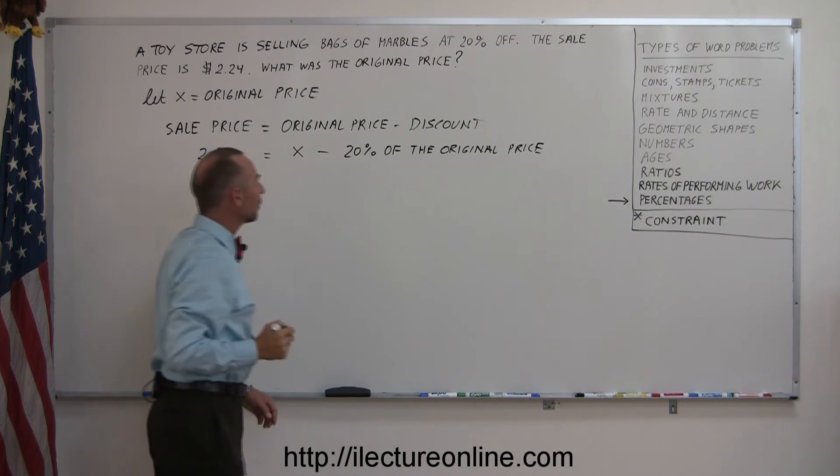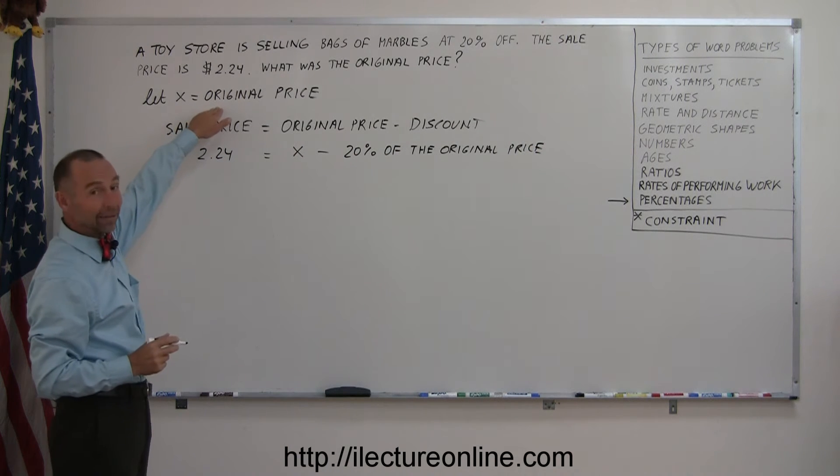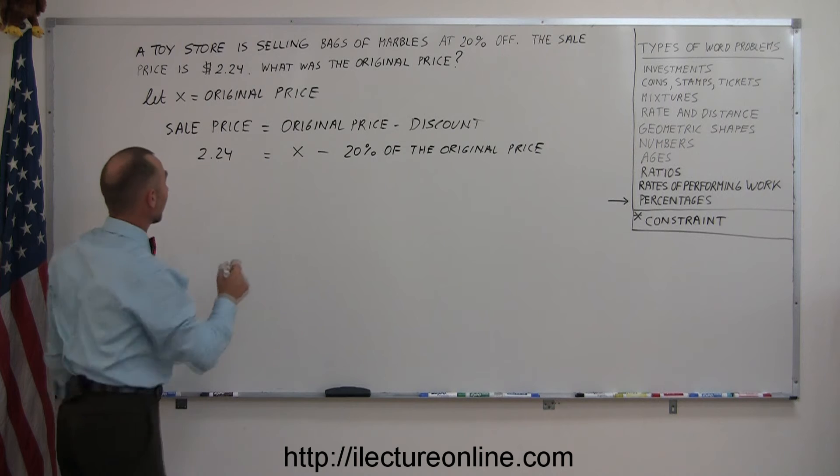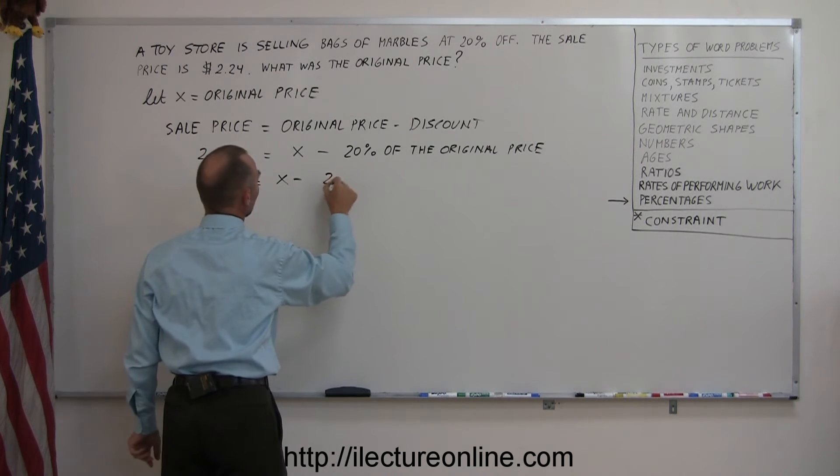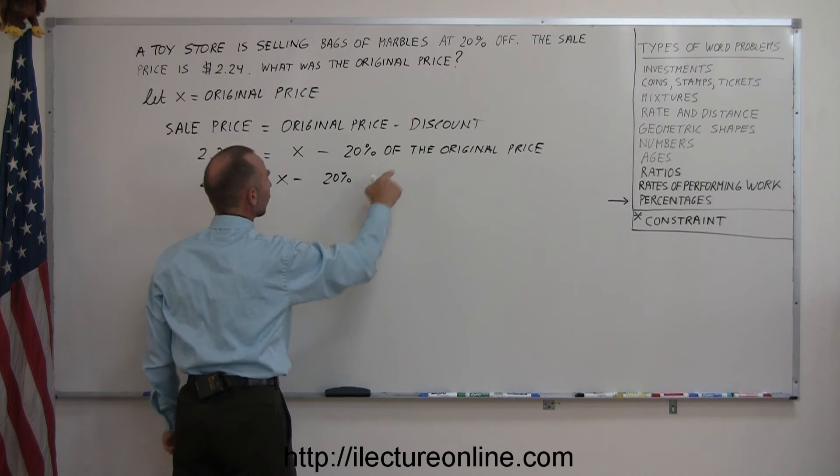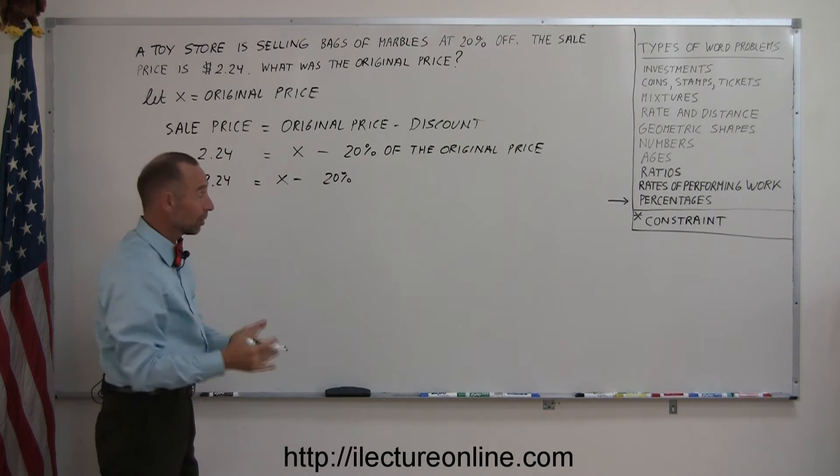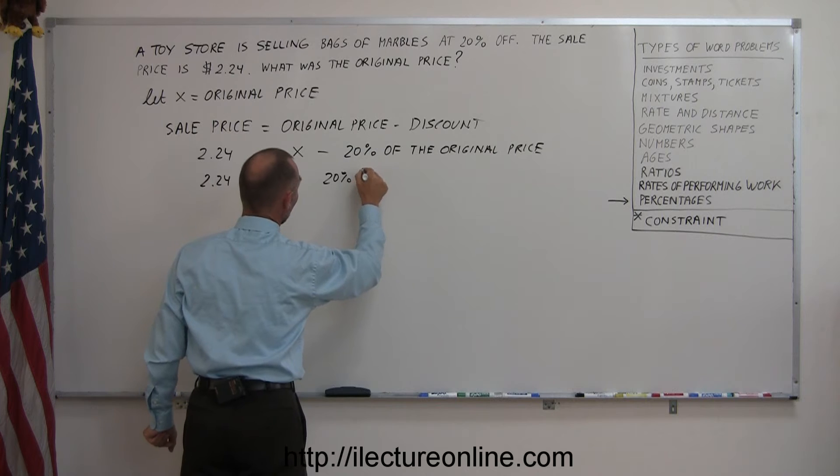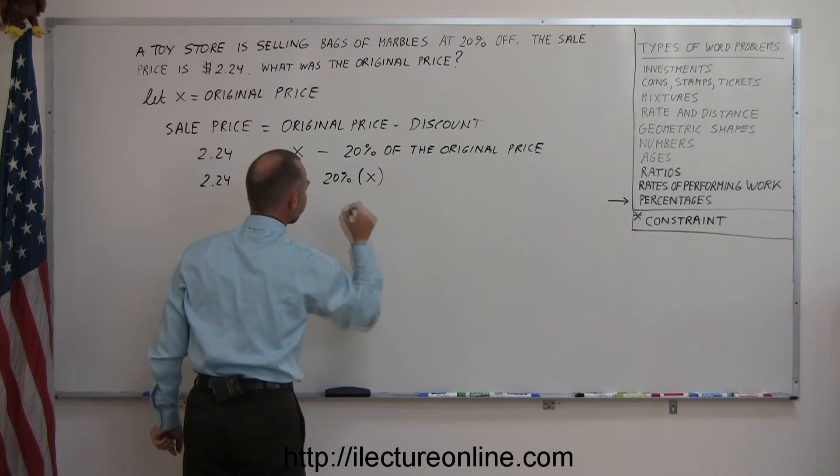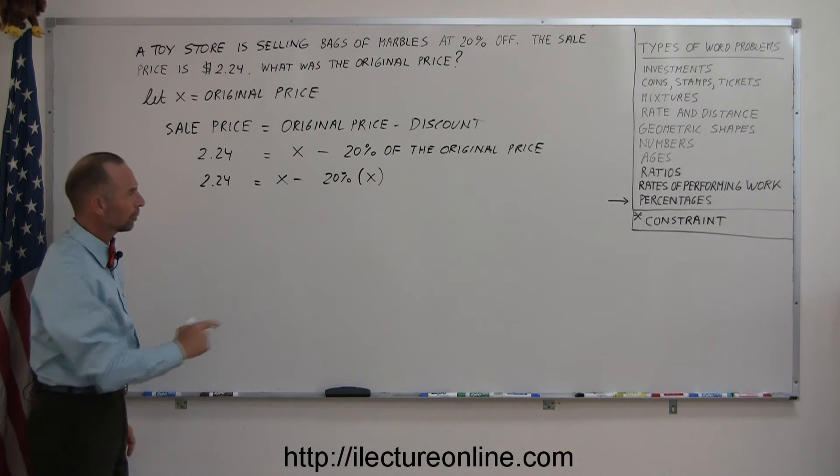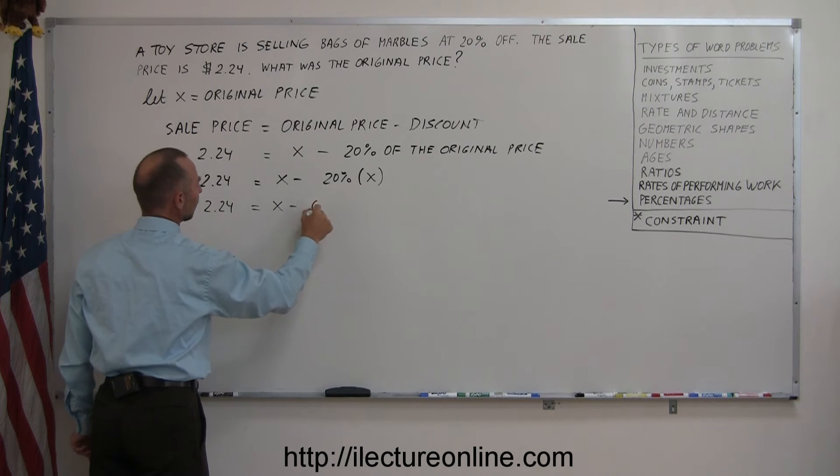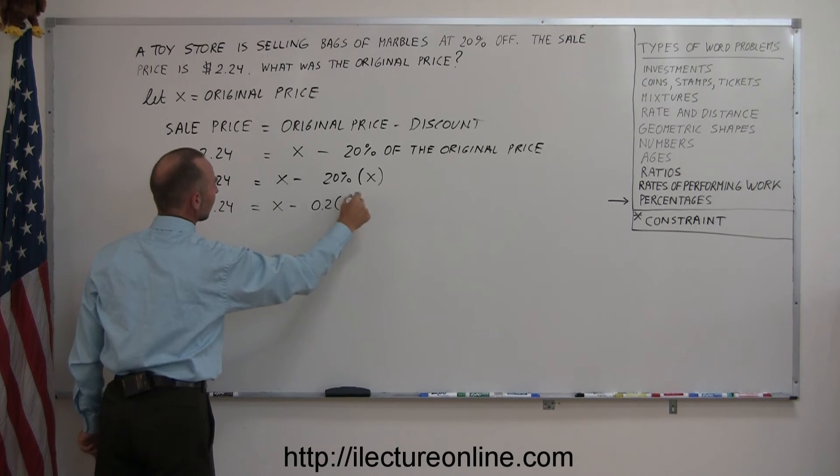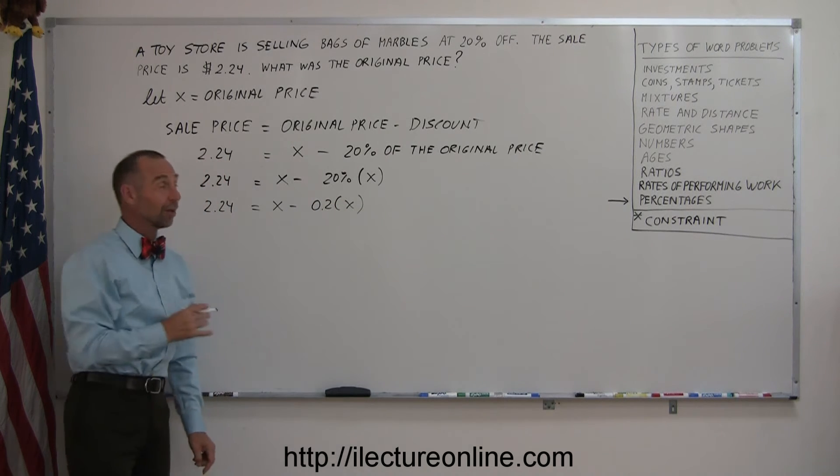We define the original price by X, so that will be 20% of X. So $2.24 equals X minus 20% of, and of course of in mathematics means multiplication, so that's 20% of the original price X. And of course we want to convert the 20% to a decimal, so that's 2.24 equals X minus 0.2 times X, and now we're ready to solve this equation.